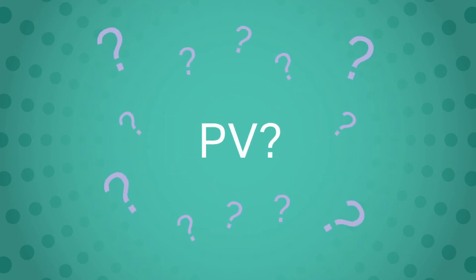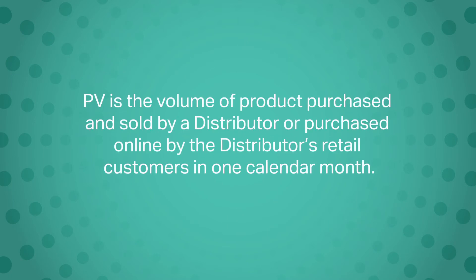Wait a minute, what's PV? Personal volume, or PV, is the volume of product purchased and sold by a distributor or purchased online by the distributor's retail customers in one calendar month.